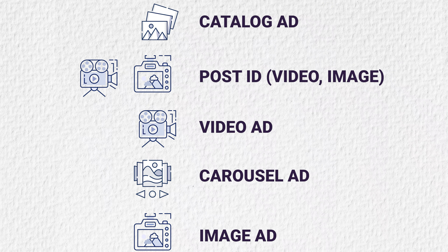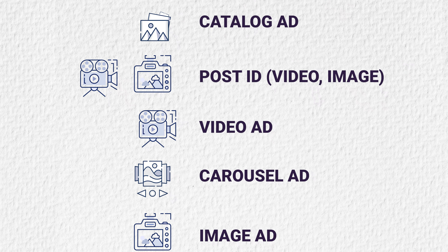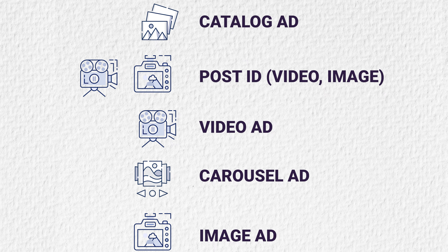So the hierarchy is: catalogs and post IDs win first, then videos, then carousels, then single images. Somewhere in between there are also instant experience ads, which I don't like because they are not working well in any account that I manage — they look very good but they don't perform well for some reason.